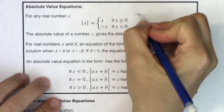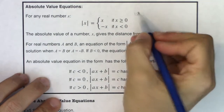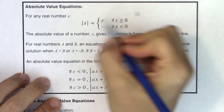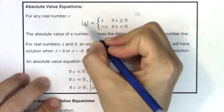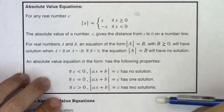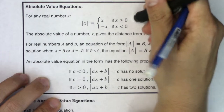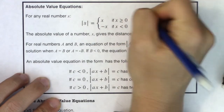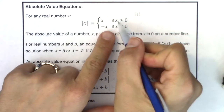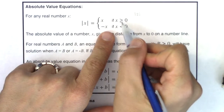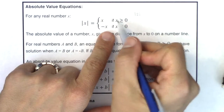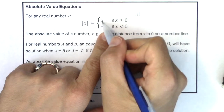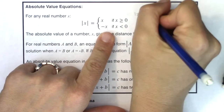Let's try the absolute value of two. The number inside those grouping symbols is two. Is two greater than or equal to zero, or is two less than zero? Two is greater than or equal to zero, so this says just write the number two.